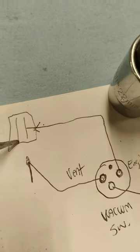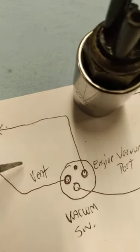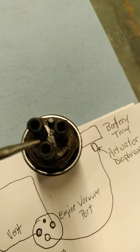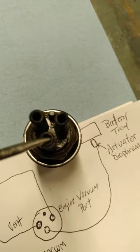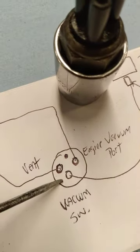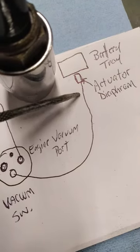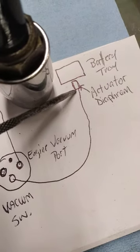Then the bottom port, the bottom vacuum port is right here, and this actually goes to the actuator diaphragm underneath the battery tray.